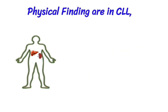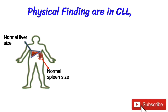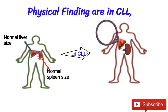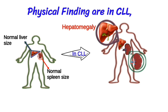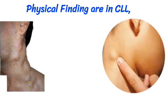Physical findings in CLL: in a normal individual you see normal liver size and normal spleen size, but in CLL you see hepatomegaly and splenomegaly. Other findings include generalized lymphadenopathy.